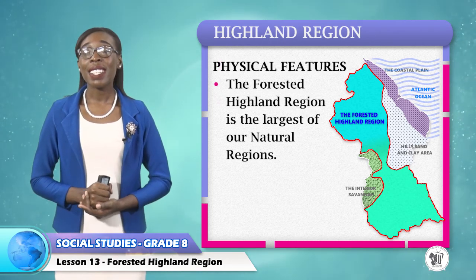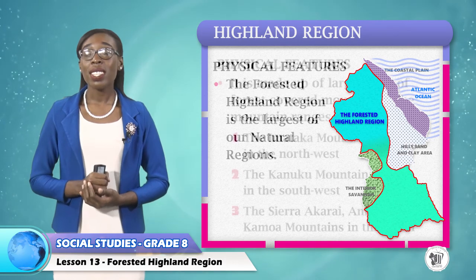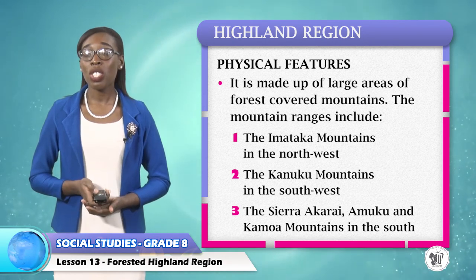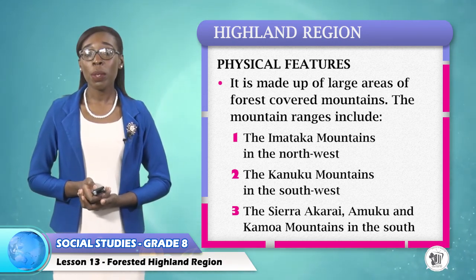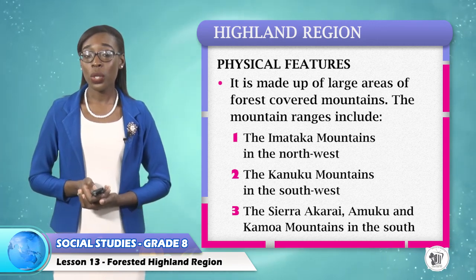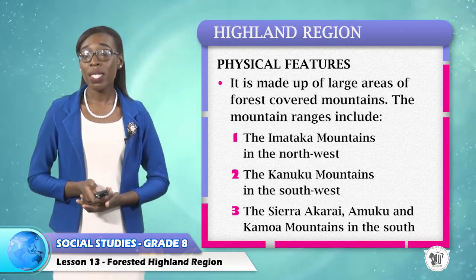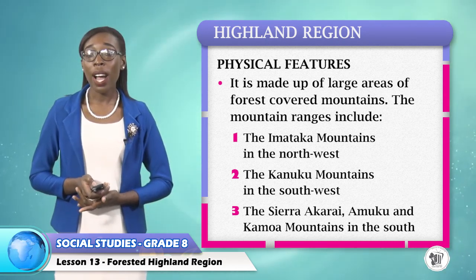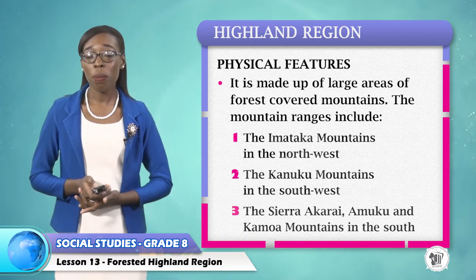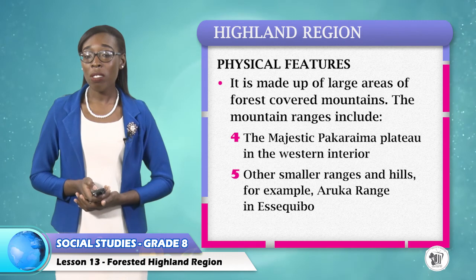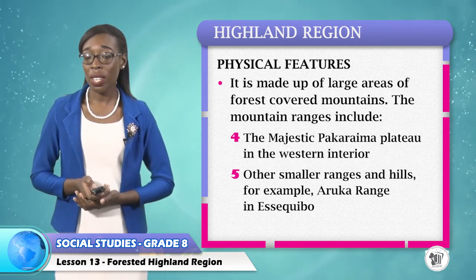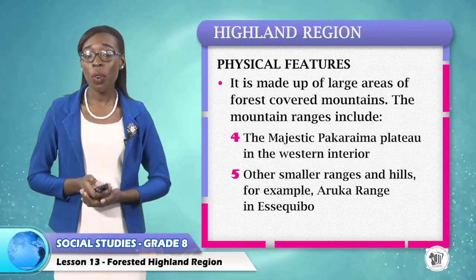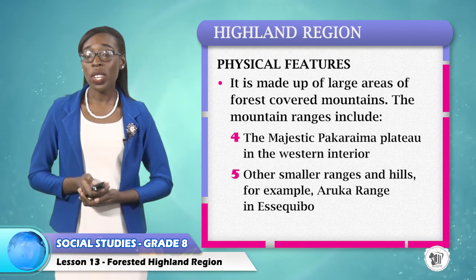The forested Highland is the largest of our natural regions. It is made up of large areas of forest covered by mountains. The mountain ranges include: one, the Imataka Mountains in the northwest; two, the Kanuku Mountains in the southwest; three, the Sahara Akari, Amuku, and the Kamua Mountains in the south; four, the majestic Pakarayma Plateau in the western interior; and other smaller ranges and hills, for example, the Arakua Range in Essequibo.